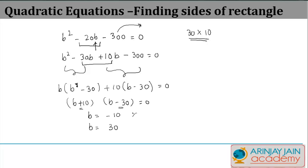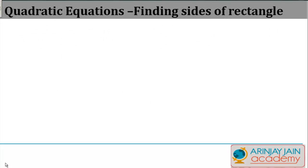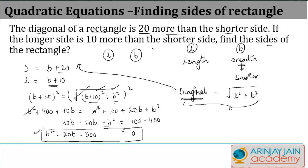The length cannot be negative, so this value won't work. The value we get for B is 30. The length equals B plus 10, or 30 plus 10 equals 40. The two sides are 40 and 30.